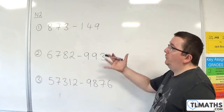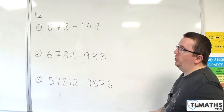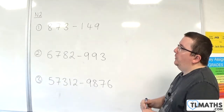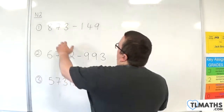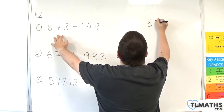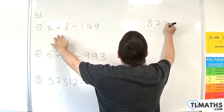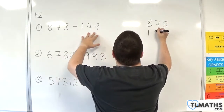In this video we're going to go through some examples of subtraction with integers. Let's start with number 1: 873 take away 149.